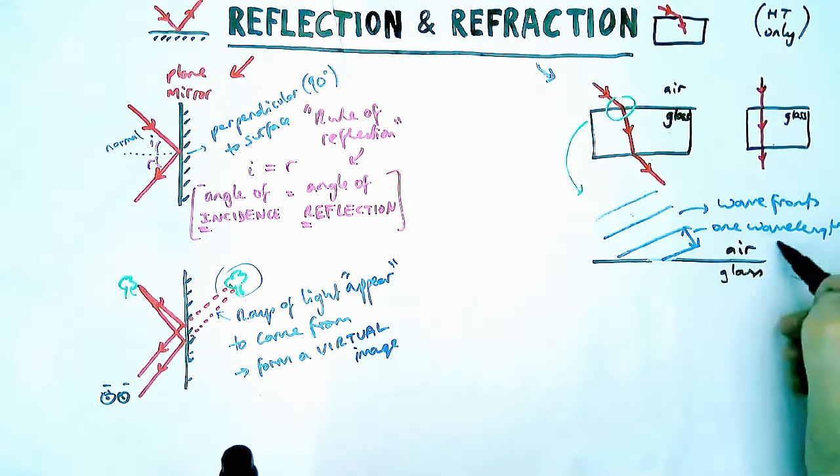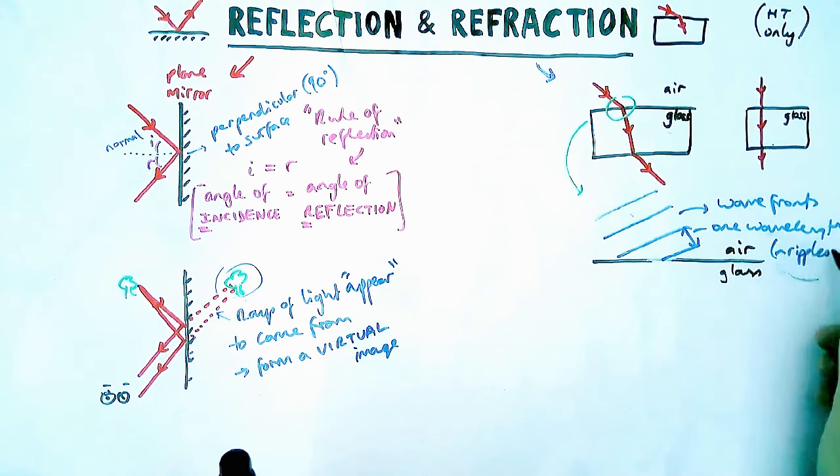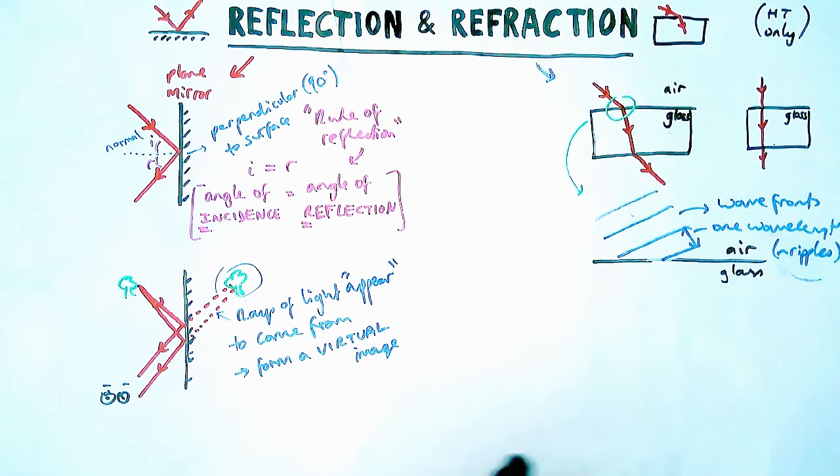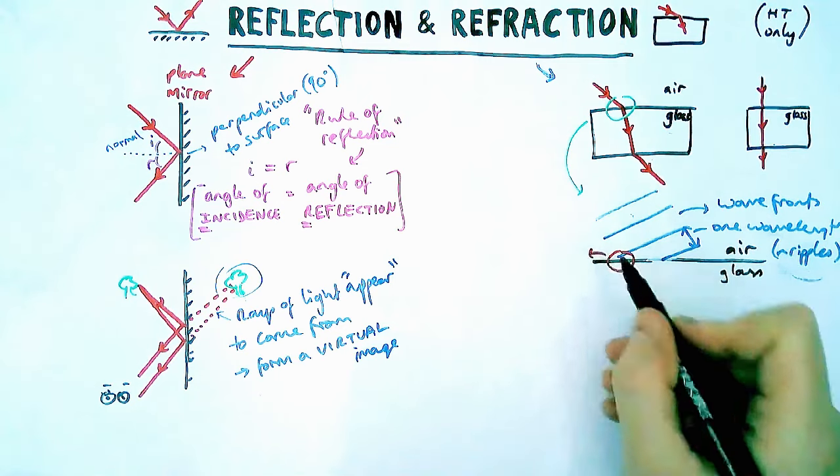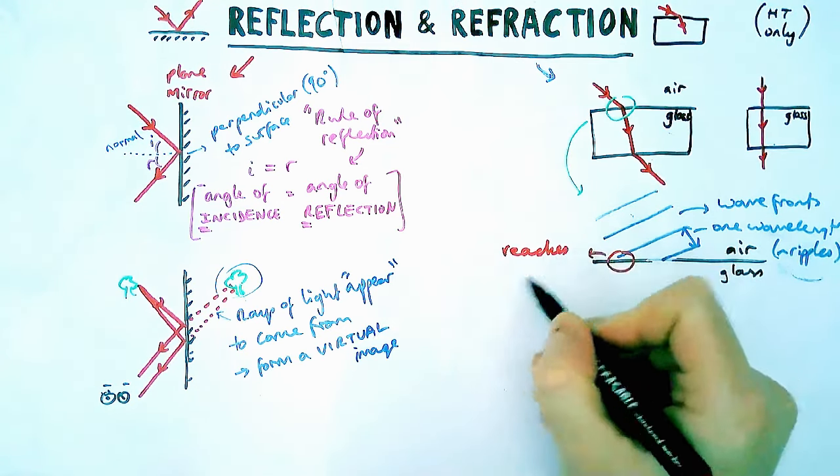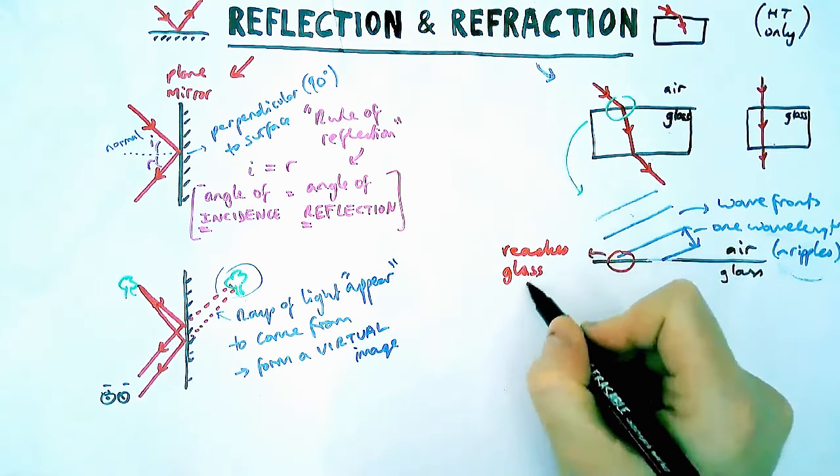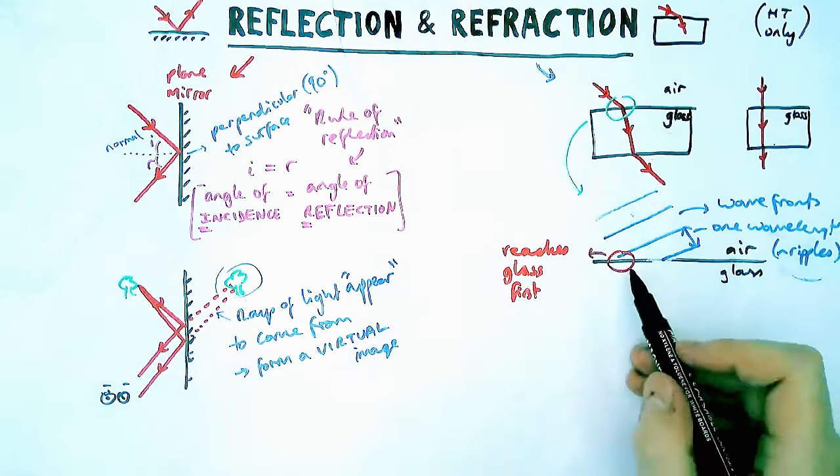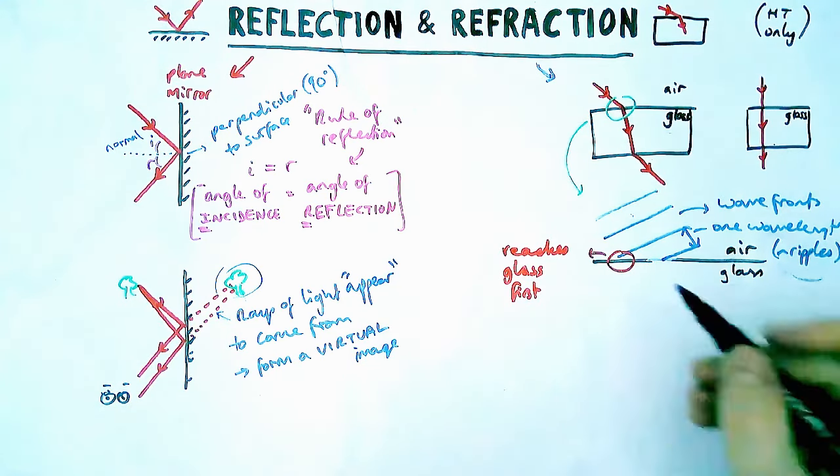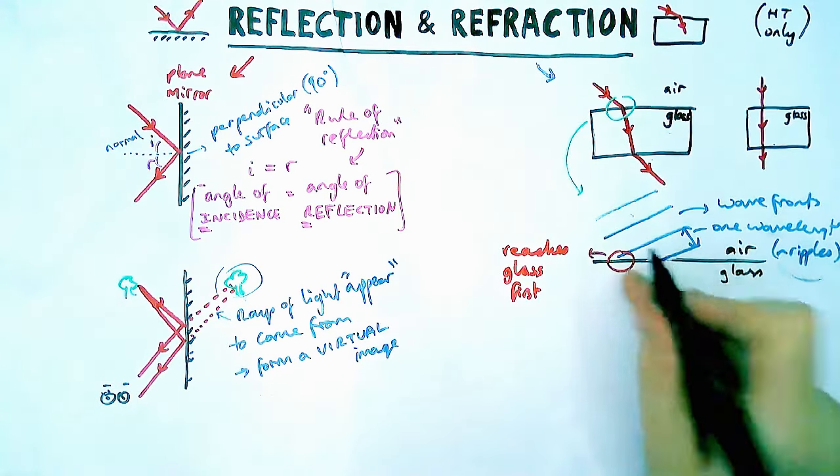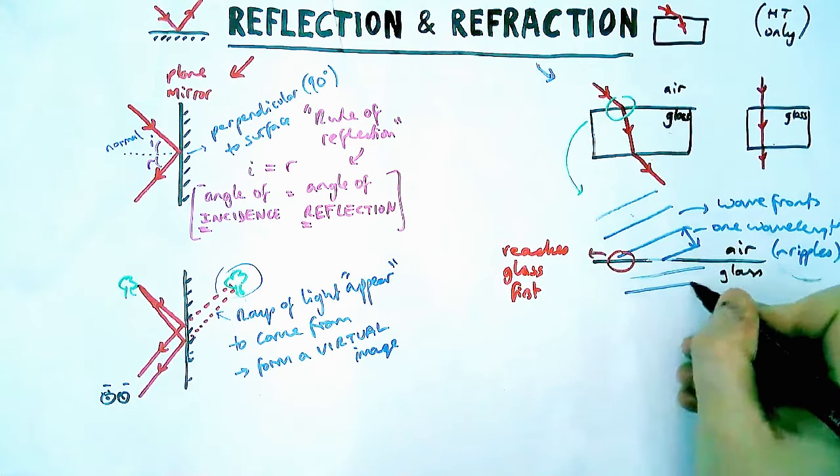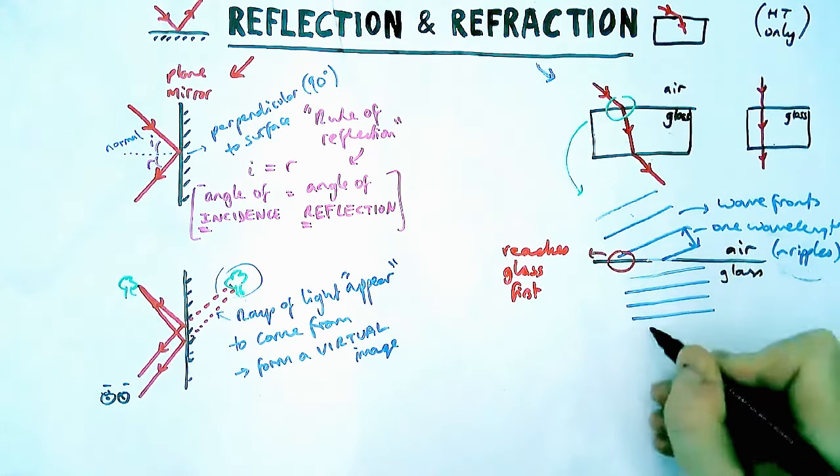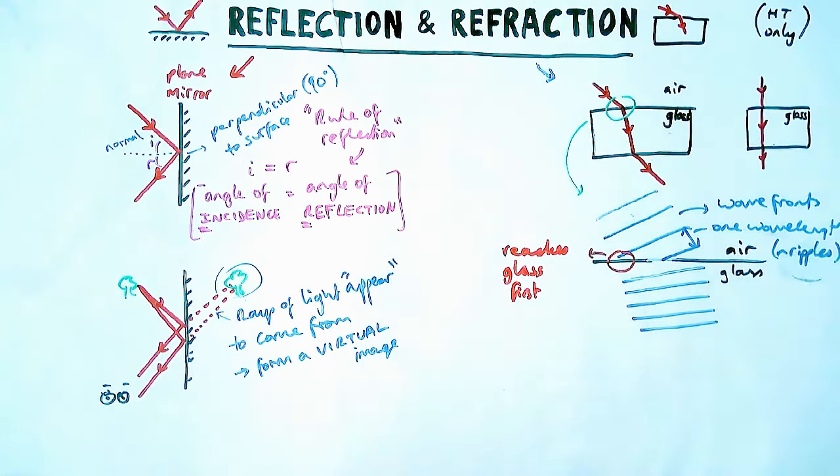So let's have a look at what happens when it reaches glass. One part of the wave, because it's at an angle, one part of the wave will hit the glass first and what happens is it slows down because glass is more dense than air. But the whole wave doesn't slow down at the same time. The one bit on the left from the way we're looking at it slows down first, and the whole wave will kind of be bent round in towards the normal in this case because that part reaches the glass and slows down first.